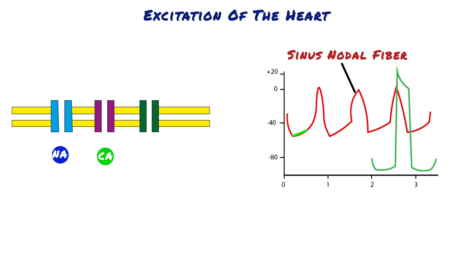As the cell depolarises towards 0 millivolts, the potassium channels open, potassium ions leave the cells, and repolarisation begins. This is the difference between the SA nodal action potential and any other: current flowing through open voltage-gated potassium channels repolarises the cells and the membrane potential returns to negative 60 millivolts.